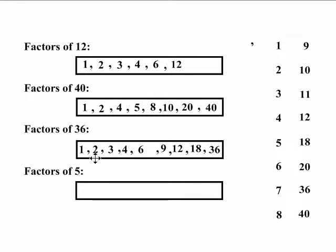They are 1, 2, 3, 4, 6, 9, 12, 18 and 36. That's a big number with a lot of factors.